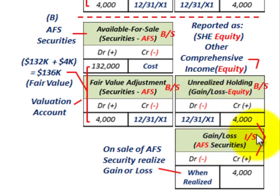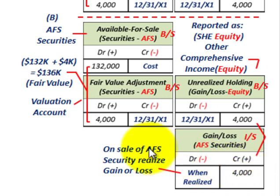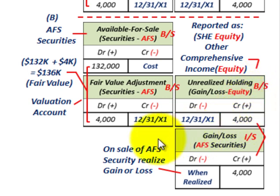For available-for-sale securities, the unrealized holding gain or loss only goes to the income statement upon the actual sale of those securities. That's when you'd realize any gain or loss — only after selling them. At that point, the unrealized holding gain or loss would be reclassified as a realized gain or loss on the income statement. Until then, that $4,000 stays in equity on the balance sheet.